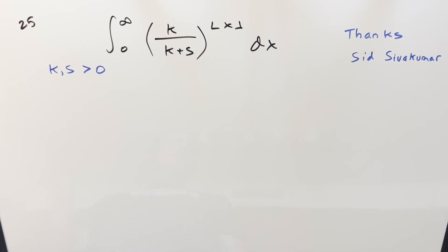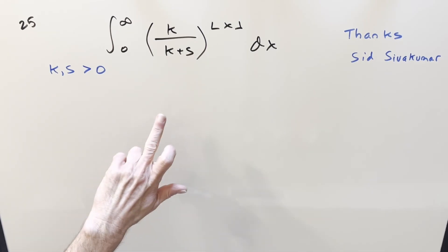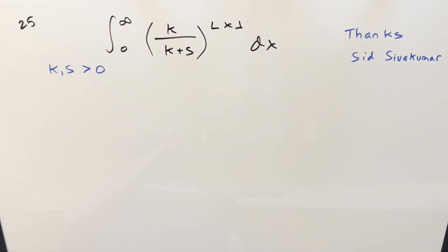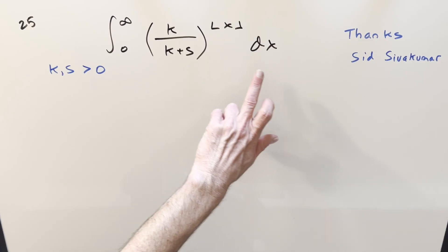We have here today an interesting problem that was sent to me by Sid. We have the integral from 0 to infinity, k over k plus s, where k and s are going to be constants greater than 0, to the floor function of x, dx.